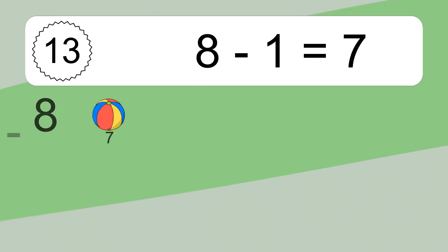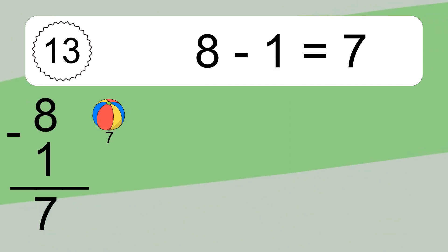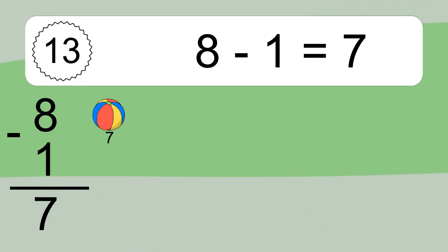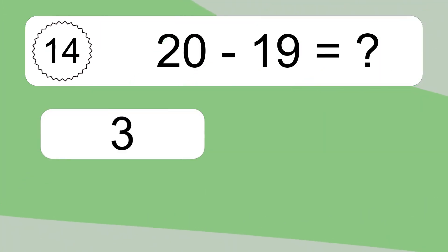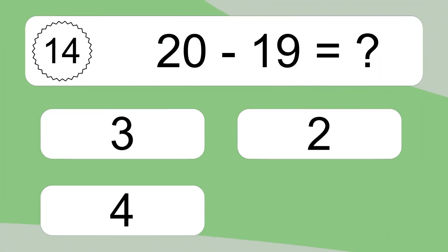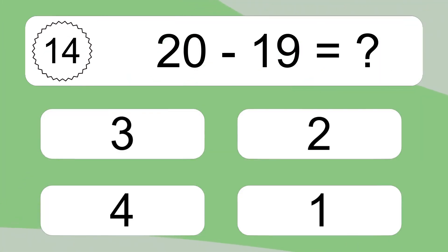8 minus 1 equals what? 8 minus 1 equals 7. Let's count it: 7. 20 minus 19 equals what?